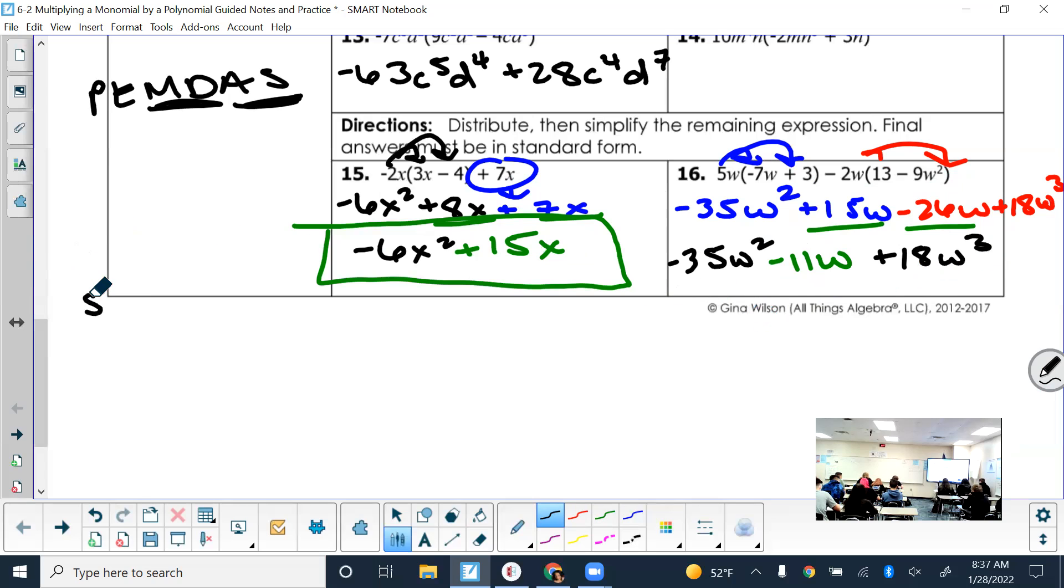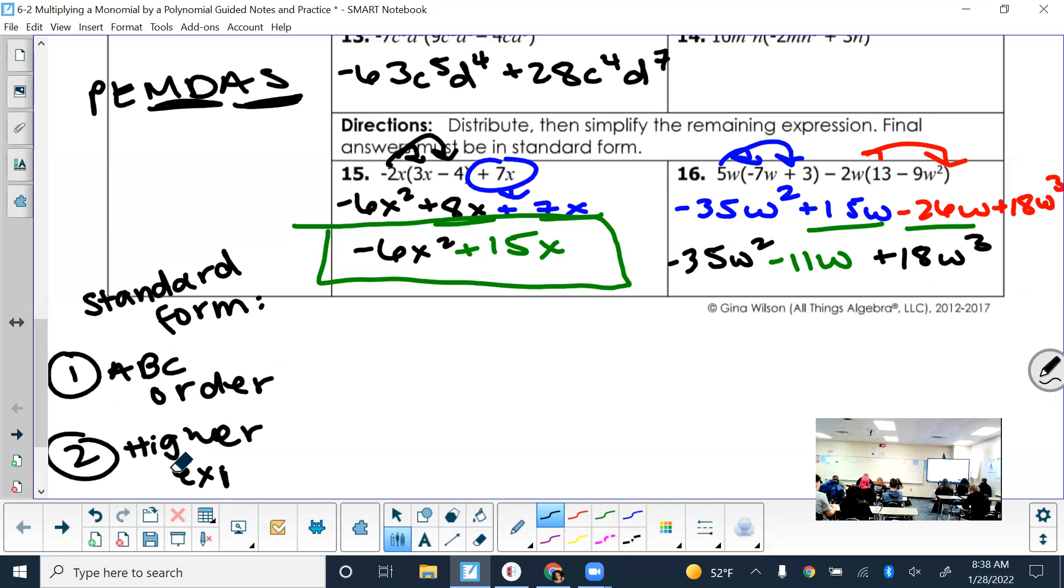What form should we practice writing our answers in? Standard form. And we should probably write this down somewhere in the margin. Standard form means that the letters are in ABC order. And then if there's multiple of the same letter, like there's multiple w's, then it goes in the higher order exponent first. So which one should be written first? Good. And it's positive, so make sure it looks positive here. Next would be? And then last would be? Now I can box this up and that's my answer.